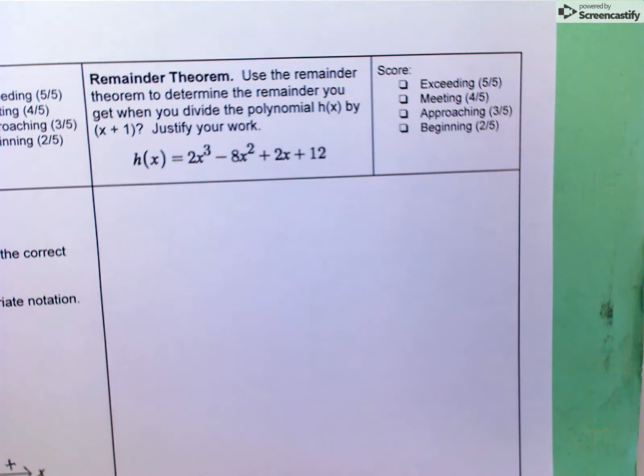The fourth and final problem on the third formative assessment is about the remainder theorem. Specifically, this problem asks us to use the remainder theorem to determine the remainder you get when you divide the polynomial h(x), this polynomial right here, by x plus 1. We're asked to justify our work.